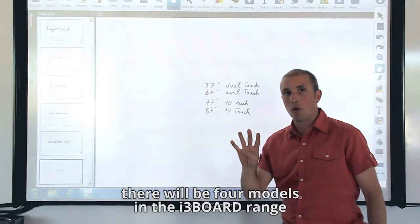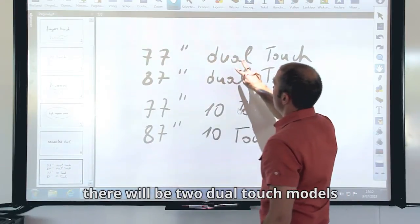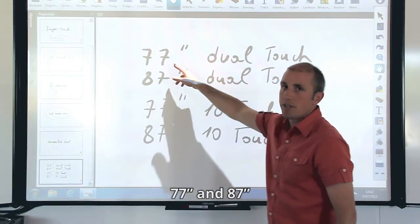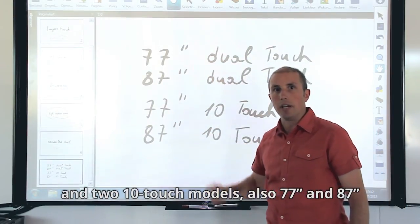There will be four models in the i3 Board range. There will be two dual touch models in 77 inch and 87 inch, and two 10 touch models, also 77 and 87 inch.